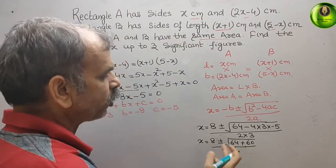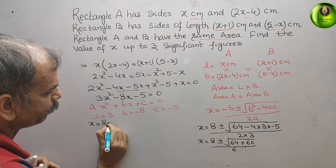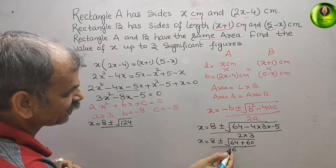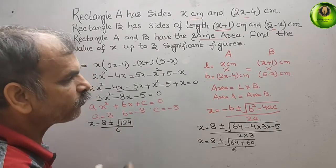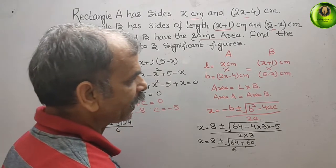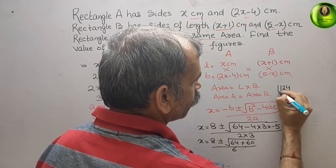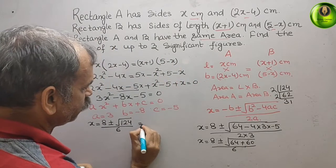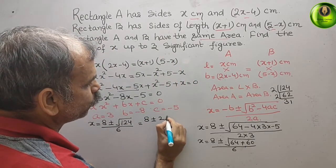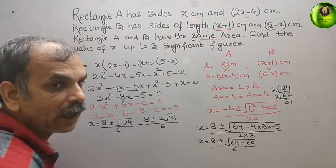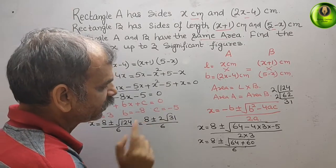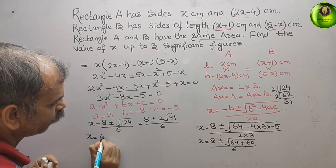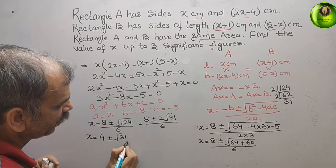So we get x equals 8 plus or minus root 124, over 6. Finding the factors of 124: 2 times 62, then 2 times 31, giving root 124 equals 2 root 31. So x equals 8 plus or minus 2 root 31, over 6. Since all terms are even, we divide by 2, giving x equals 4 plus or minus root 31, over 3.